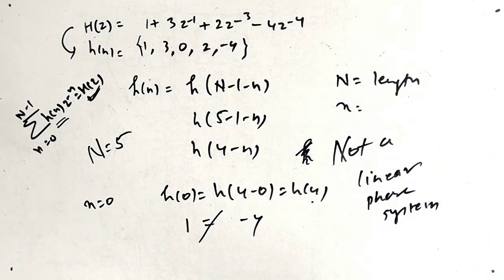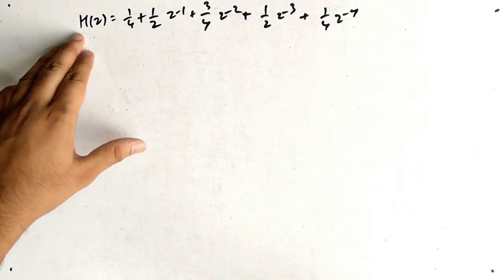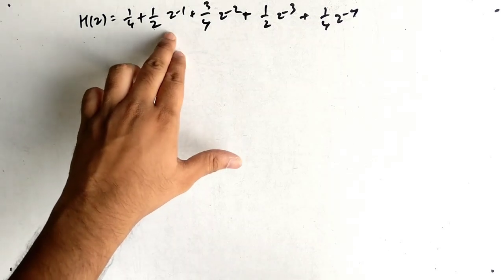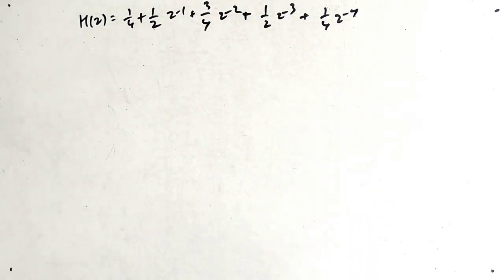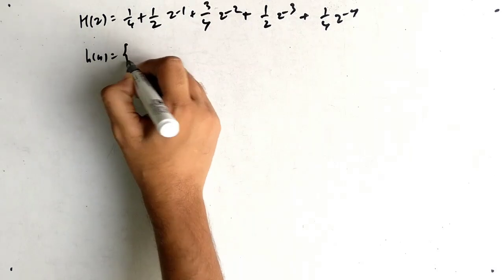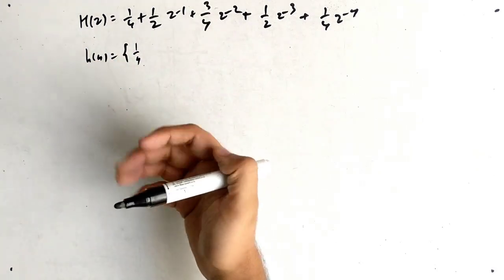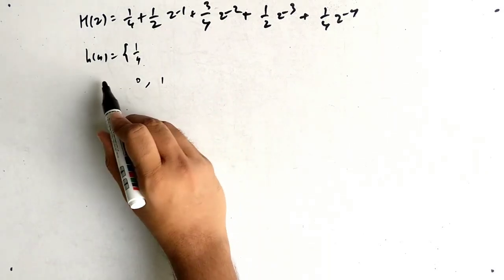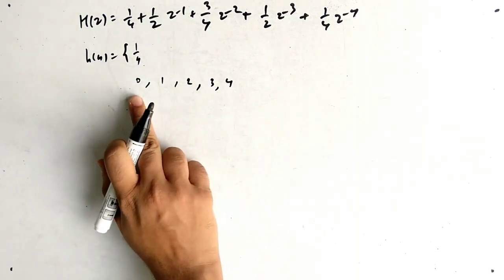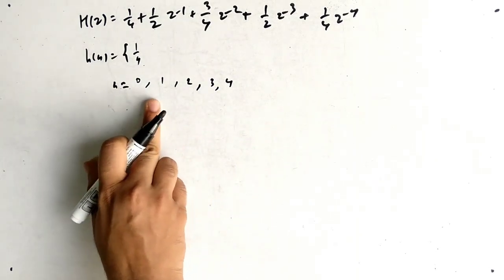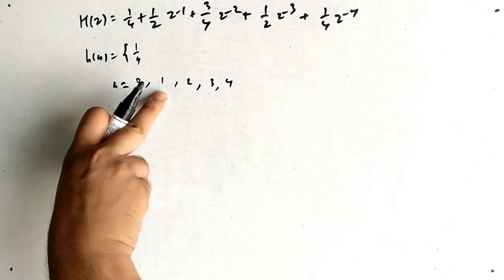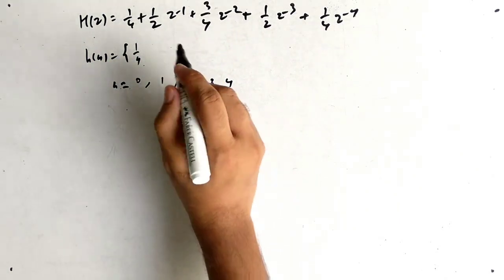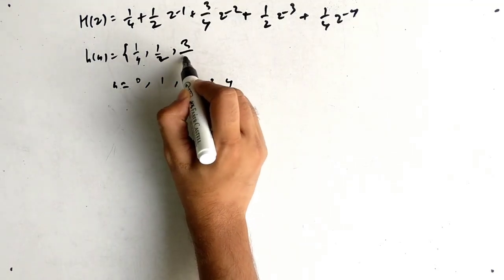Let's take an example where we can draw a linear phase realization. Suppose H(z) = 1/4 + (1/2)z⁻¹ + (3/4)z⁻² + ... For writing h(n), whatever is the power of z⁻ⁿ gives the index n, and the coefficient gives h(n).